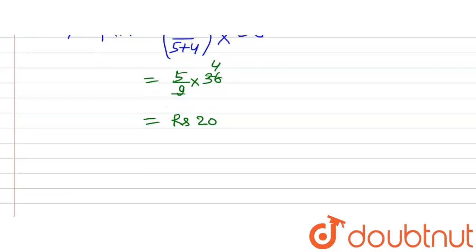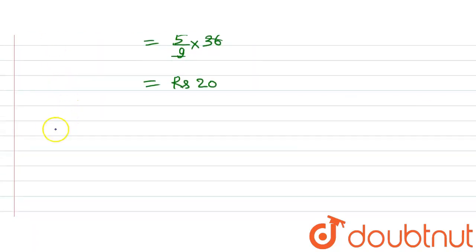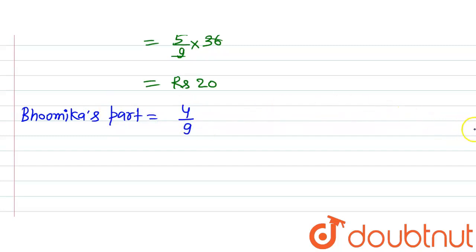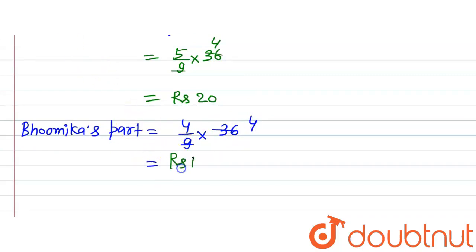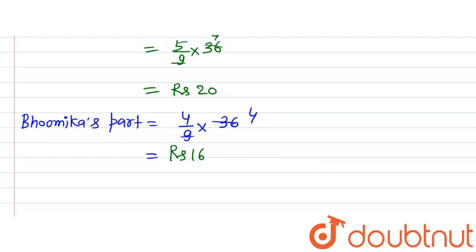Now let's find out Bhumika's part. Bhumika's part will be equal to 4 divided by 9 of the given amount, that is 36. Now 36 divided by 9 gives us 4, and 4 multiplied by 4 is 16 rupees. So Bhumika's part is 16 rupees and Shreya's part is 20 rupees.